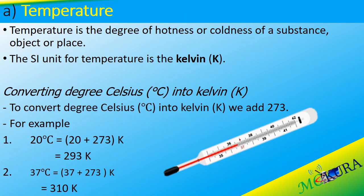The first basic quantity we are checking here is temperature. What is temperature? Temperature is the degree of hotness or coldness of a substance, object, or place. The SI unit for temperature is the kelvin, abbreviated as K. Our thermometer, which we use to measure temperature, is calibrated in degrees Celsius.